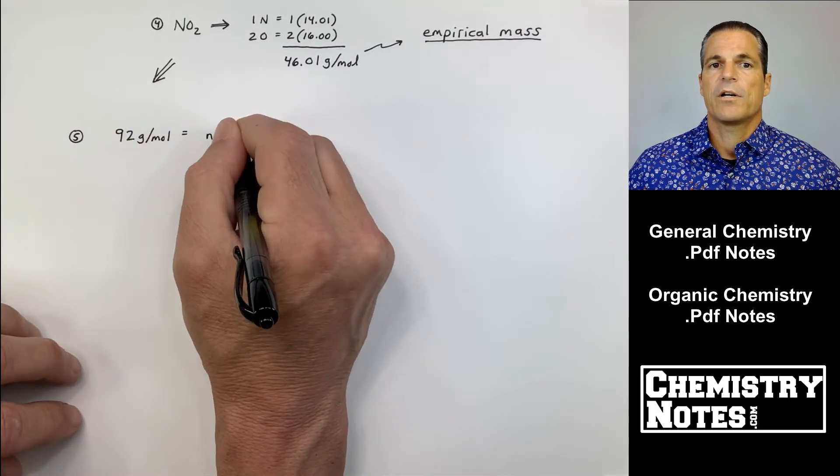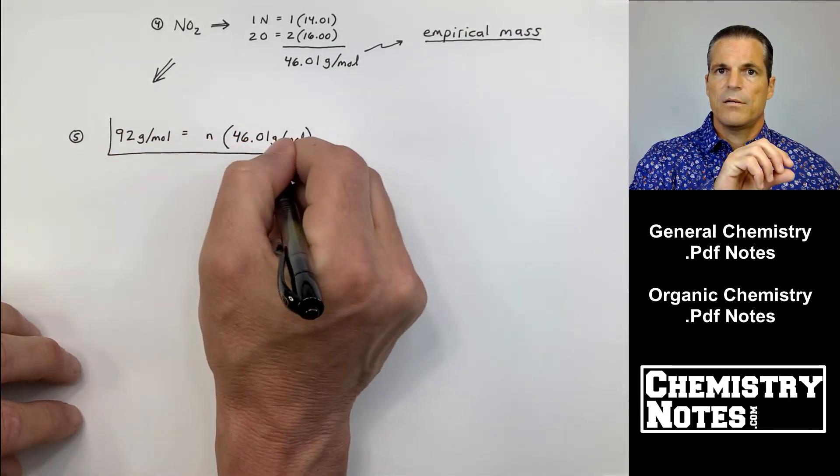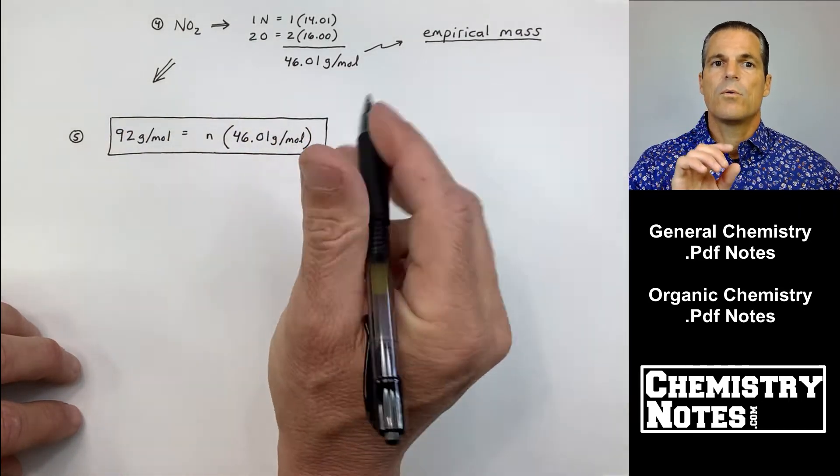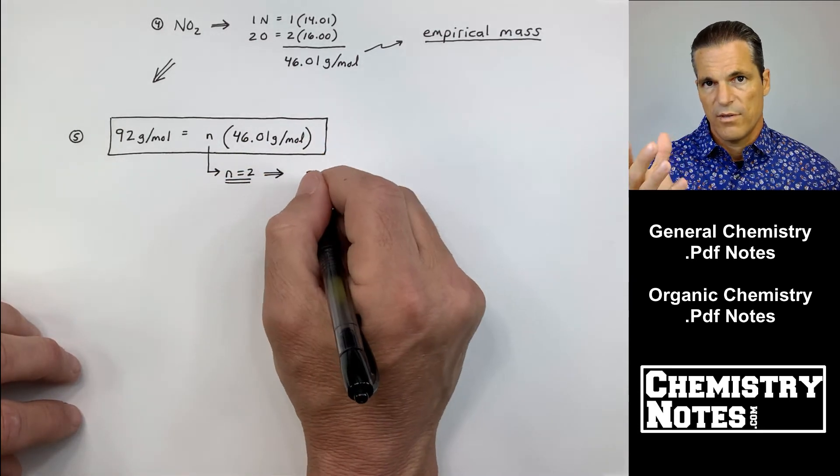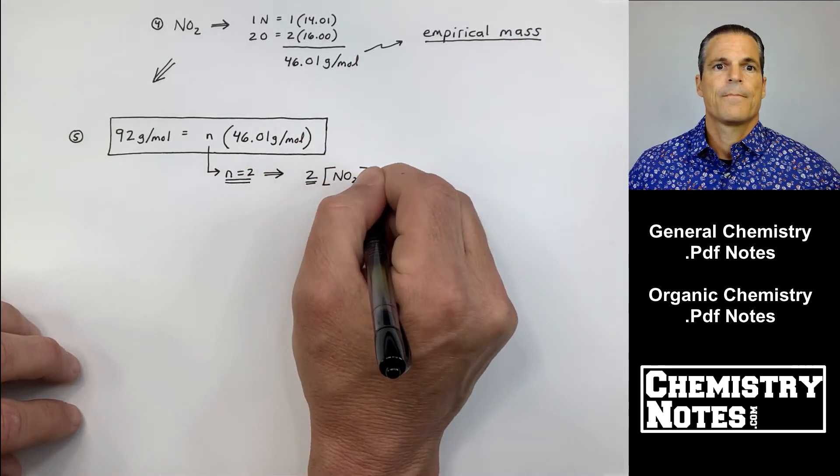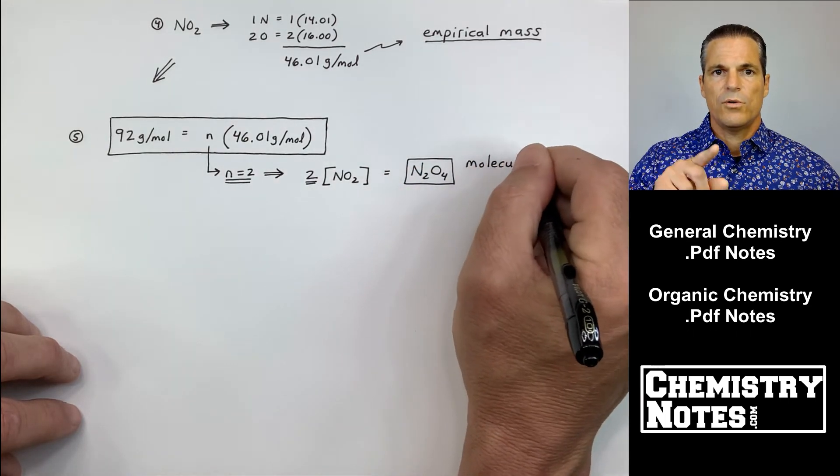Now we're going to use that boxed formula where it's molecular formula, or molar mass, equals n times the empirical formula or the empirical formula mass. n is two once again, so we multiply this through.